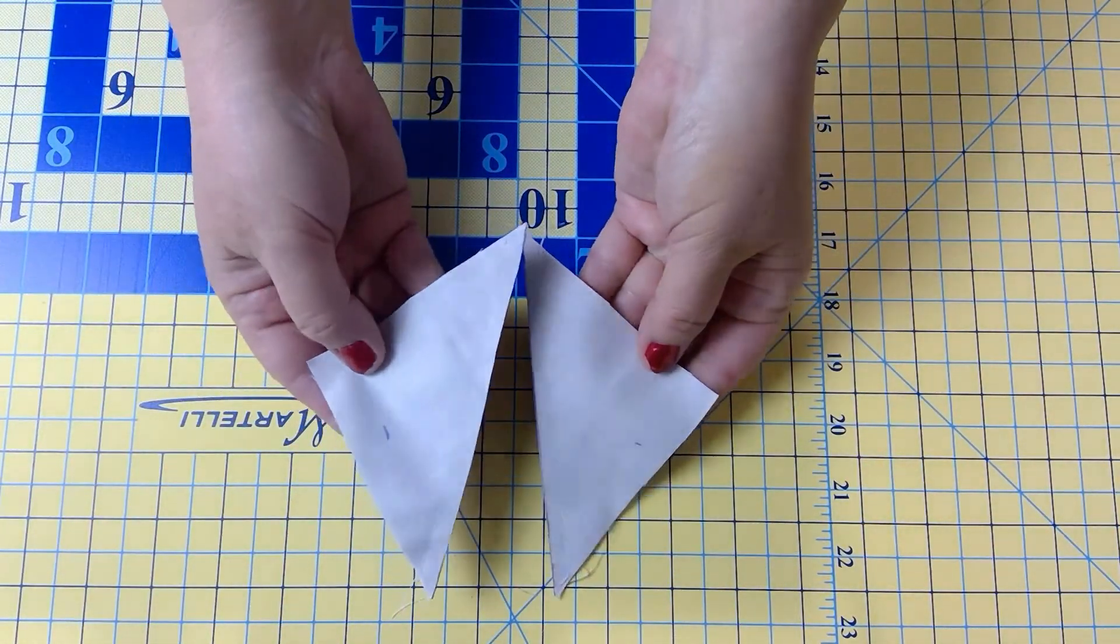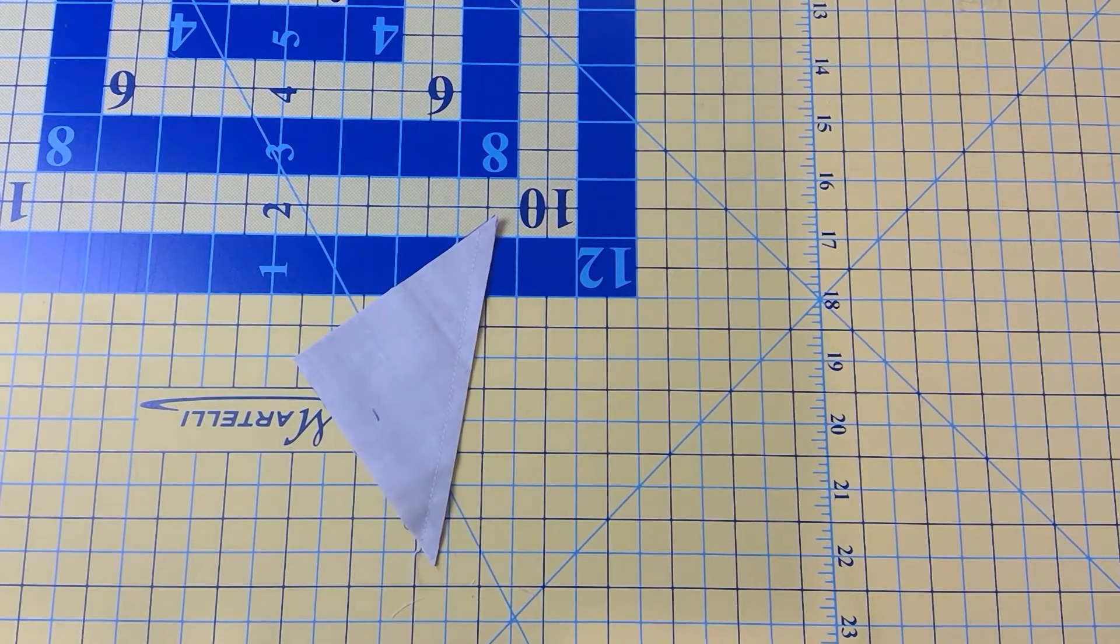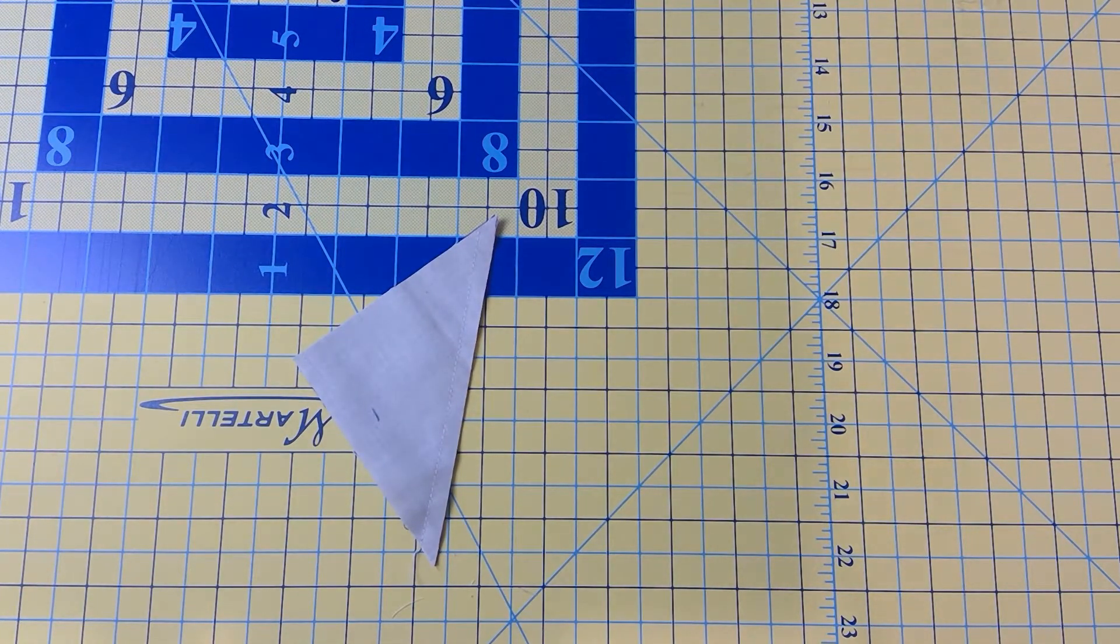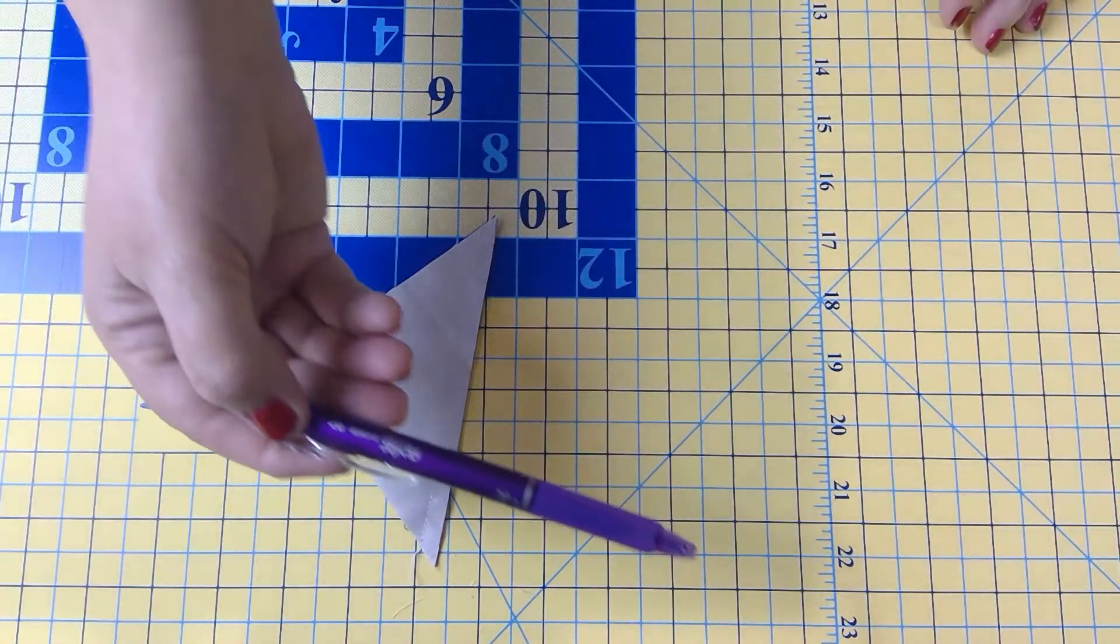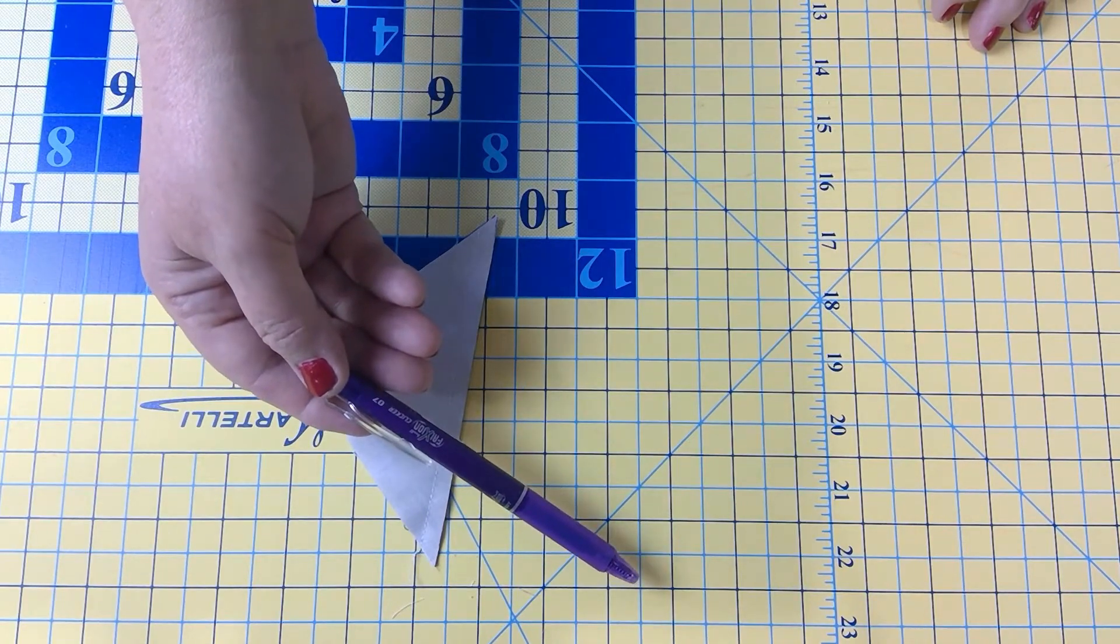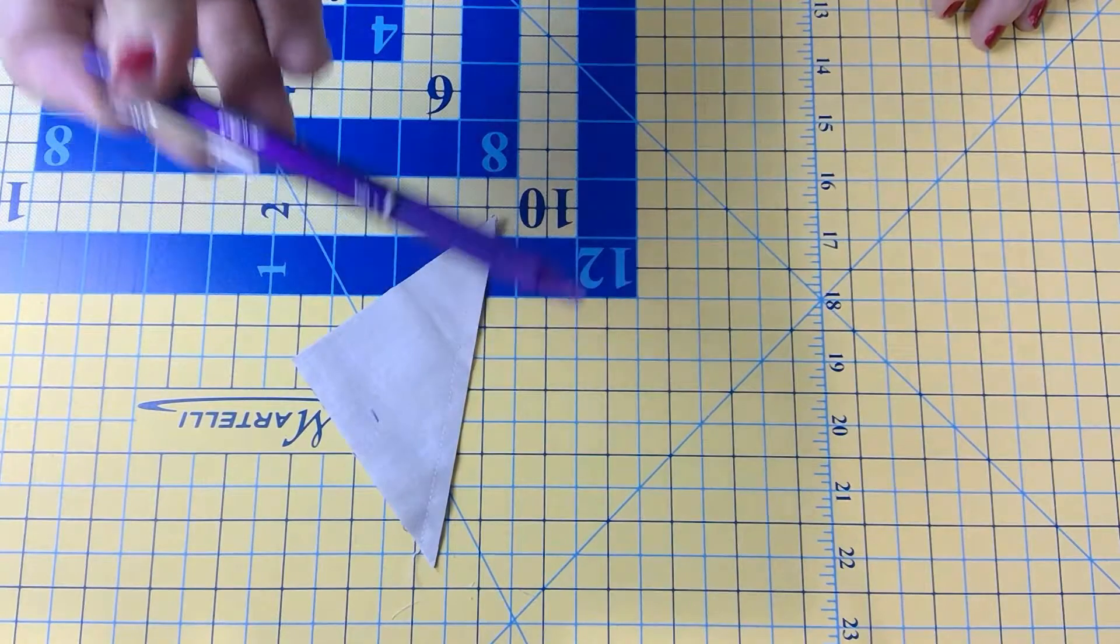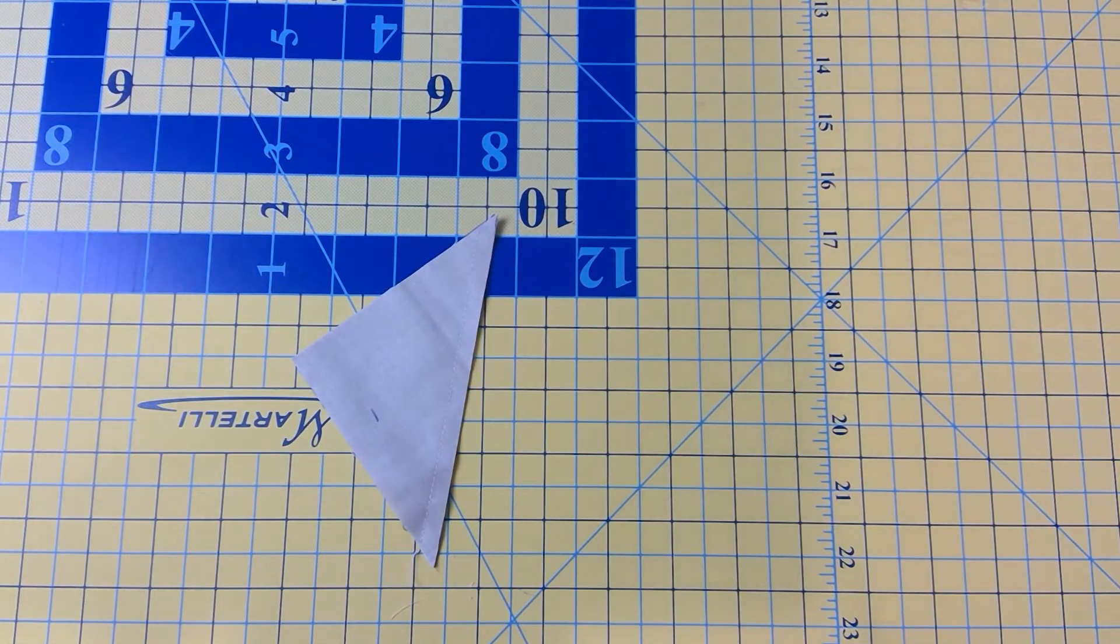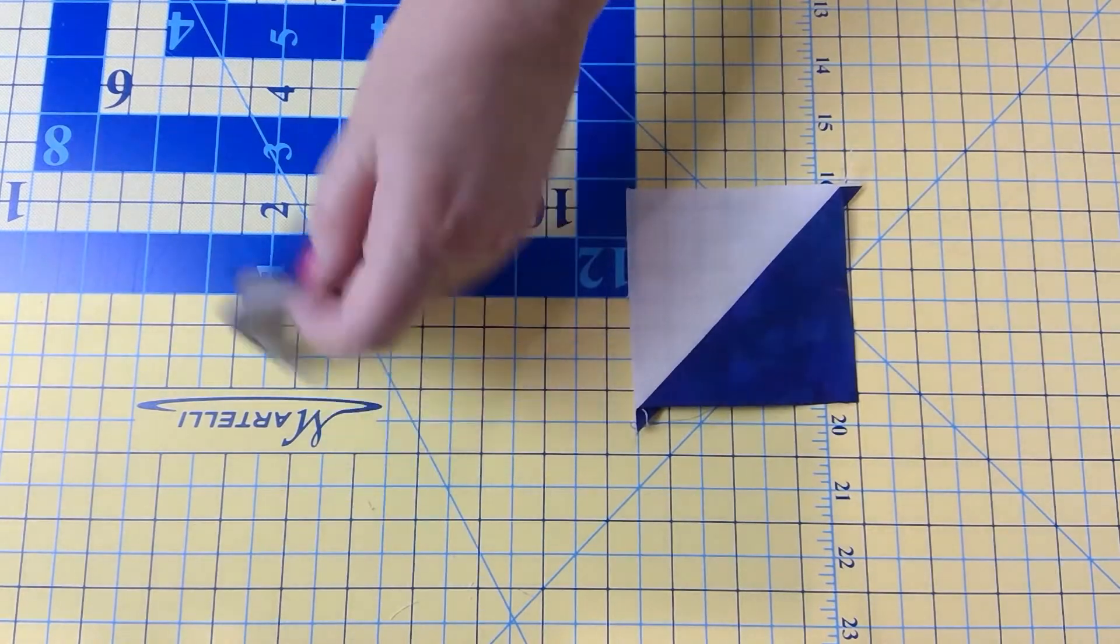So we have two now. The ink pen that I used to draw on my fabric, which goes away from the heat of the iron, is a Frixion clicker and I love it. It also has an eraser and I have a purple one and a blue one. You're going to press towards the dark. Now I am using patriotic colors for this block.